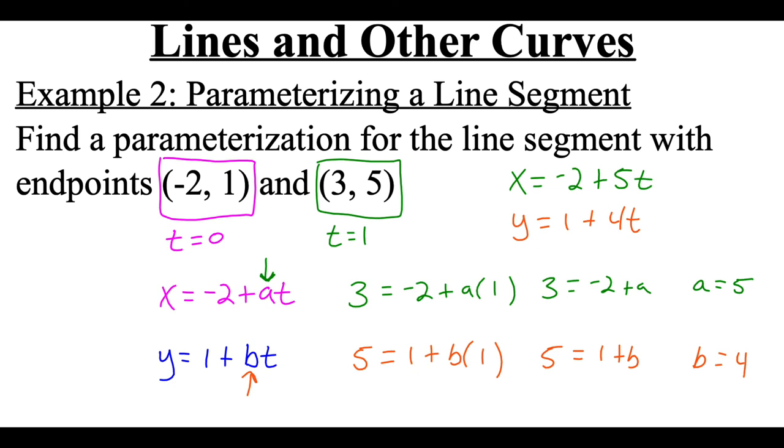Now we do also need to define our restrictions on the parameters. That first point we said happened at a t value of 0. That second point we said happened at a t value of 1. So my parameter is going to be for t values that are between 0 and 1. That's going to be it for this video. Thanks for watching.